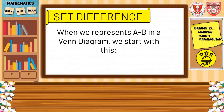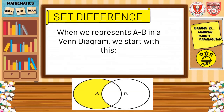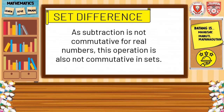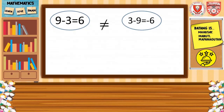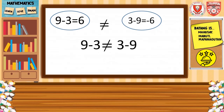Set difference. When we represent A minus B in a Venn diagram, we start with this. As subtraction is not commutative for real numbers, this operation is also not commutative in sets. Therefore, 9 minus 3 equals 6, and 3 minus 9 equals negative 6 — these two are not equal. It means 9 minus 3 is not equal to 3 minus 9, which is equivalent to A minus B not equaling B minus A.